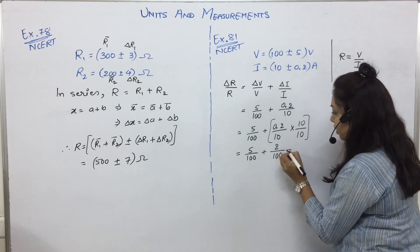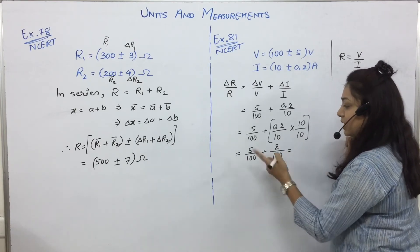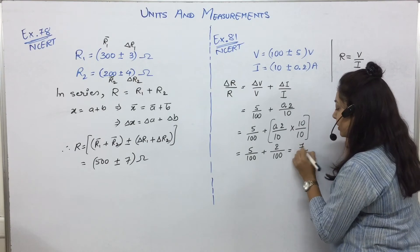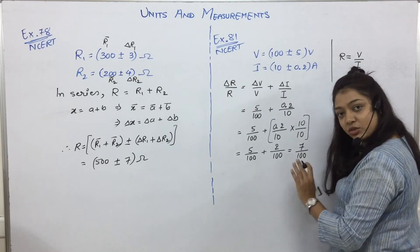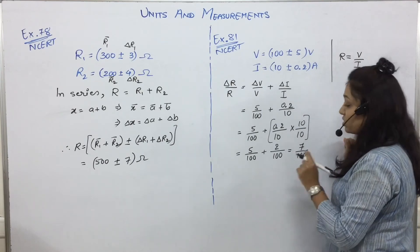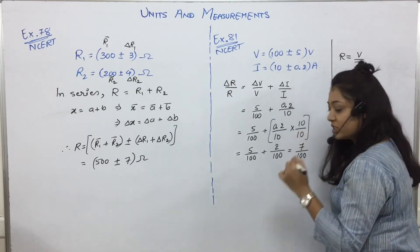So this will end as what? Denominator same, numerator will add up, denominator will remain as it is. Clear? Okay, delta R by R mil gaya, bas isko yahi rakhna hai.